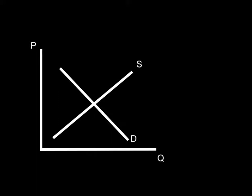Welcome back to another podcast with Mr. Hagan. On this podcast we are going to put the demand curve and the supply curve together onto the same graph, so that we have a downward sloping demand curve and an upward sloping supply curve. On the vertical axis we have the price of the good, and on the horizontal axis we have the quantity of the good.